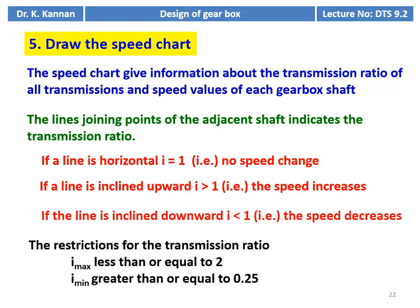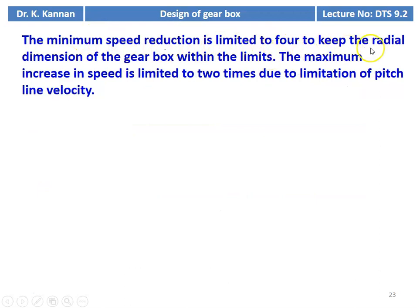The restrictions on transmission ratio are: I_max ≤ 2 (when speed increases); I_min = 0.25 (i.e., 1/4, when speed decreases). These are the limitations. If we exceed either limit, the number of teeth on a particular gear will be large, increasing the pitch circle diameter of the gear and thus increasing the overall size of the gearbox. The minimum speed reduction is limited to 4 to keep radial dimensions of the gearbox within limits. The maximum speed increase is limited to 2 times due to pitch line velocity constraints.